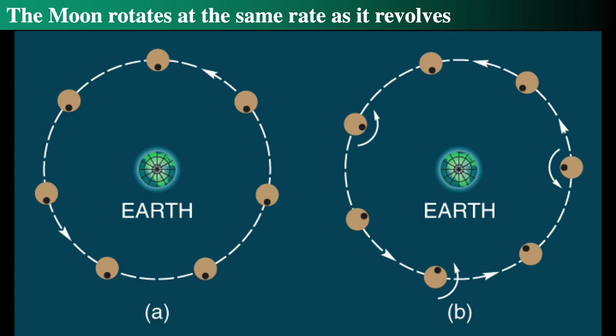This is a result of tidal locking for the Earth-Moon system. The Moon, during its formation about 4 billion years ago, was much, much, much closer to the Earth than it is today. It was also going around the Earth a lot faster and spinning a lot faster. Over time the distance went out — the Moon moved to a greater distance — and the rotation slowed until it matched the month. That's called tidal locking, and I talk about that in another video.